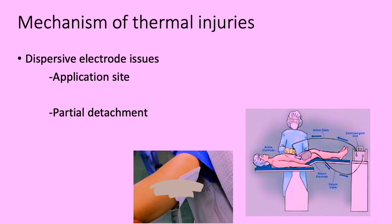Some mechanisms of thermal injuries include issues associated with the dispersive pad — for example, misplacing the pad: if operating in the pelvic region, the pad should be placed under the thigh. You could also have problems with detachment. However, there is a return electrode monitor on the ESU generator — it turns red when the pad has fallen off the patient and green when it is still attached.